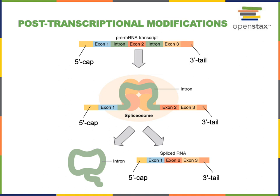Following transcription, post-transcriptional modifications will be required in order to produce the mature messenger RNA, transfer RNA, or ribosomal RNA. These post-transcriptional modifications include the addition of a five prime cap to a messenger RNA. This five prime cap includes a guanine triphosphate and a modified nucleotide attached onto the five prime end of the RNA, and will function as a signal to help guide the movement of the messenger RNA out of the nucleus and to the ribosome for translation.